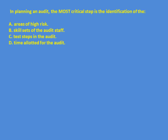Next question: In planning an audit, the most critical step is — identification of areas of high risk, skill set of the audit staff, test steps in the audit, or time allocated for the audit. Only when the auditor knows the areas of risk can the other elements — B, C, and D — be addressed. The answer is identification of areas of high risk.